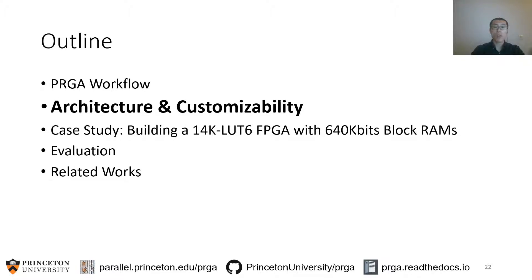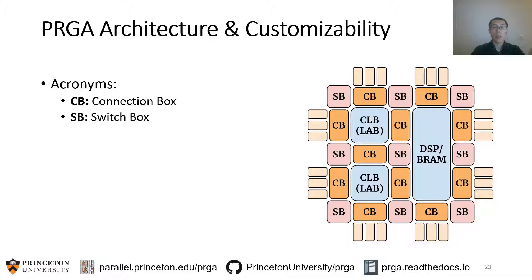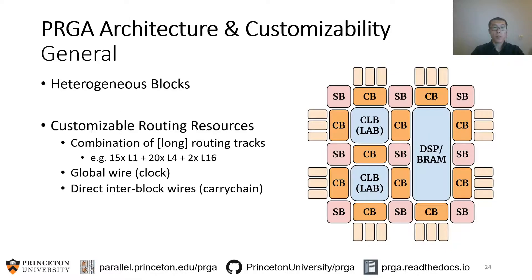Next, let's talk about the architecture and customizability of PRGA. This figure shows the architecture of a modern FPGA. PRGA supports heterogeneous blocks, so you can have different types of logic blocks with different sizes. The toy FPGA in this figure has two CLBs containing LUTs and flip-flops, plus one block RAM which is two tiles big. PRGA also allows you to customize the routing resources — you can customize the length, count, and combination of routing tracks. Global wires like clock or reset are also supported, as are direct carry chains that bypass the routing tracks.